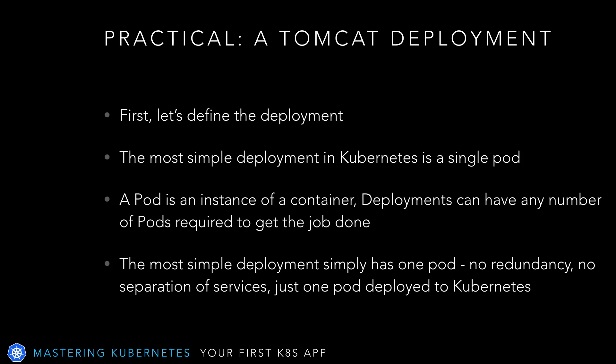The first step is to define the deployment. The most simple deployment in Kubernetes is a single pod. A pod is an instance of a Docker container. Deployments can have any number of pods required to get the job done — they can range from one instance of a single image, like we're doing today, and grow to hundreds of images of different types. The most simple deployment simply has one pod: no redundancy, no separation of services, just one pod deployed to Kubernetes.